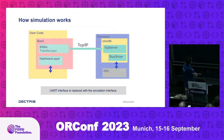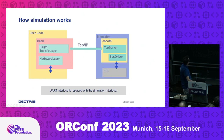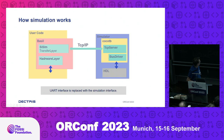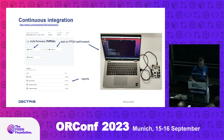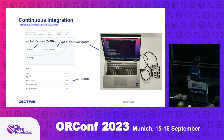In simulation, we use CocoTB. Instead of UART, we switch the interface to TCP/IP to communicate with the simulator. In emulation, we switch that interface back to UART. All of this is integrated into continuous integration — every test is executed in simulation automatically.